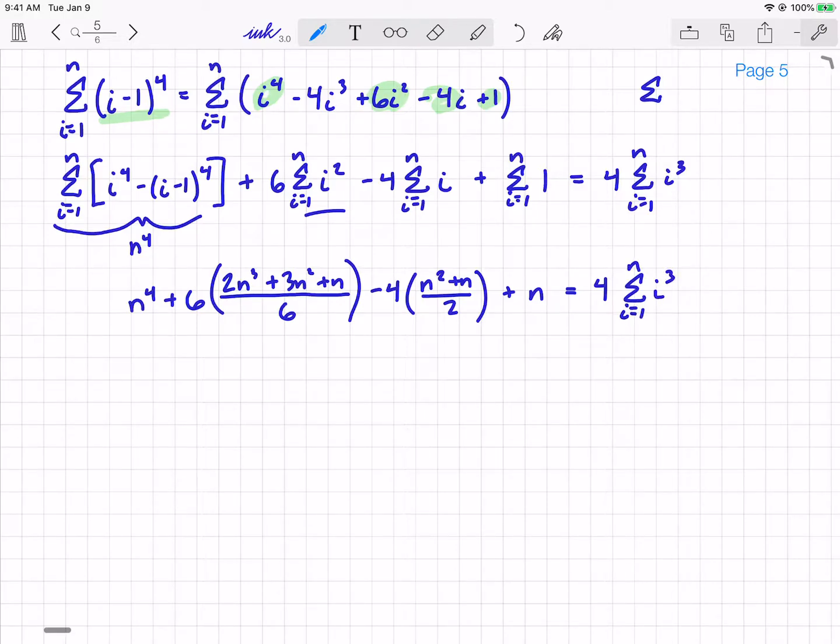Now if you rewrite everything, simplify that left side, you get n to the 4th plus 2n cubed plus 3n squared plus n, because these 6s just simply reduce to 1. The 4 over 2 reduces to 2, so you get minus 2n squared minus 2n. And then lastly, plus n, that still equals 4 times the summation of i cubed. Combine like terms, you get n to the 4th plus 2n cubed plus n squared equals 4 times the summation from i equals 1 to n.